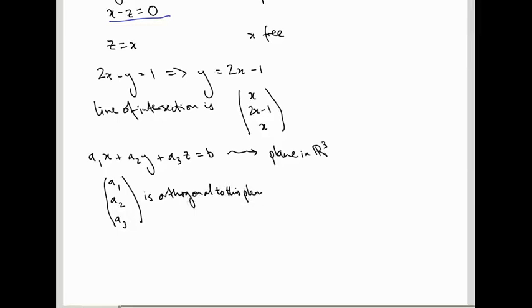And b is telling us something about where it intercepts each of the different axes. So for example, where does it intercept the z-axis? Well, the z-axis is where x and y are both 0. So if x and y are both 0, then we get a3z equals b. So z equals b over a3 is the z-intercept. And similarly, for the other two axes.